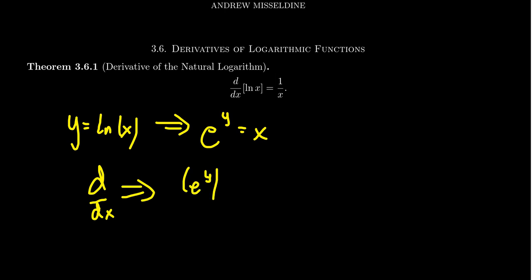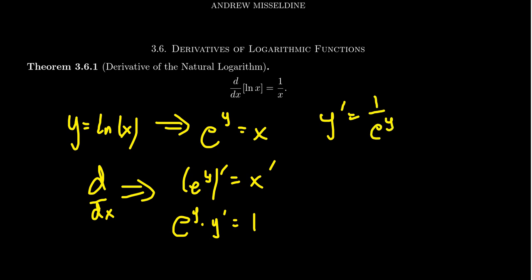If we take the derivative of both sides — the derivative of e to the y and the derivative of x, both with respect to x — by rules of implicit differentiation, the derivative of e to the y becomes e to the y times y prime, because the derivative of e to the x is just itself, and you multiply by the inner derivative y prime. The derivative of x is 1. So to get y prime, we divide both sides by e to the y, giving us y prime equals 1 over e to the y. But e to the y is just x, so making that substitution, we get 1 over x. The derivative of the natural log of x is 1 over x.